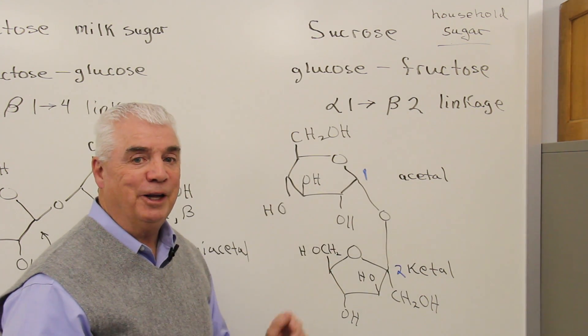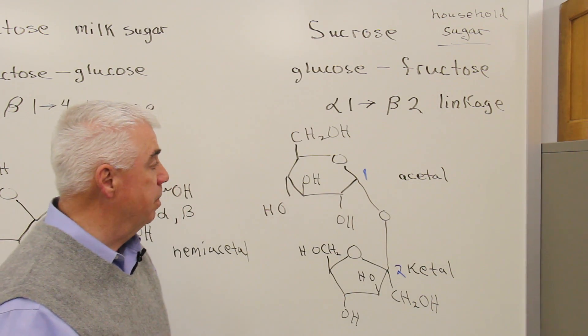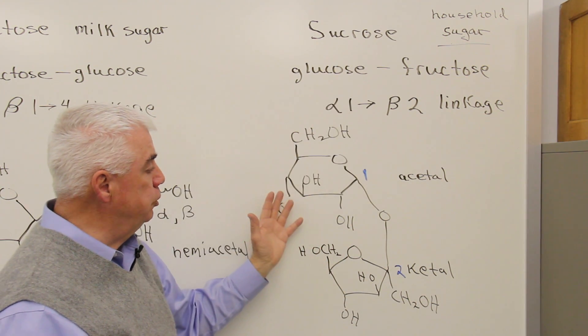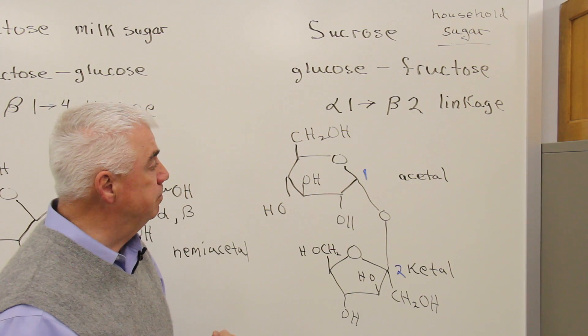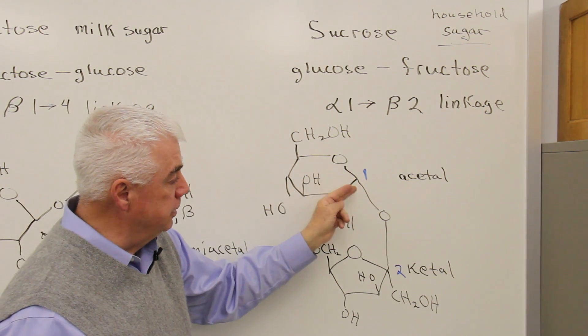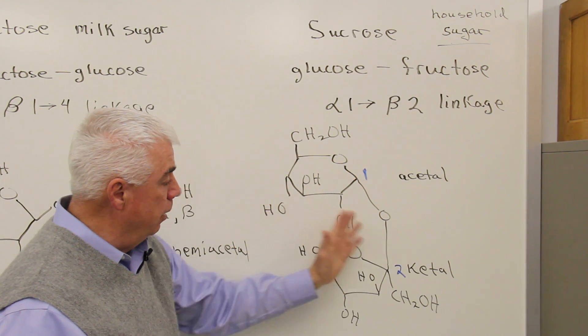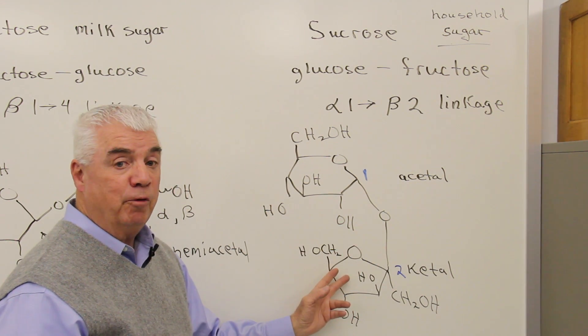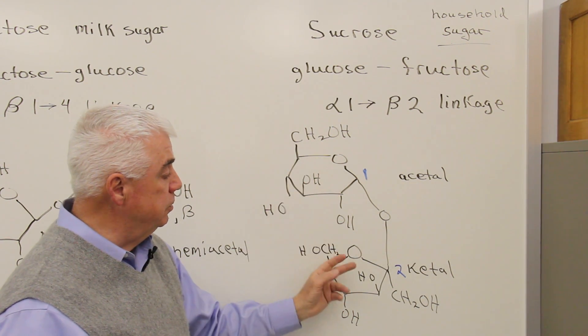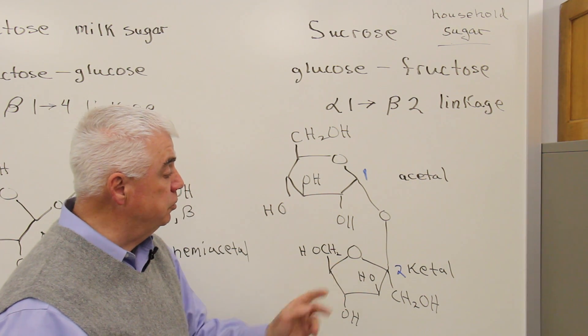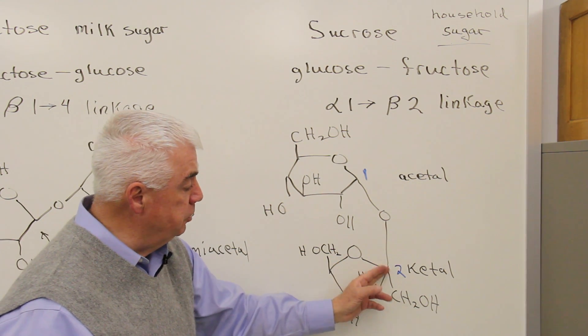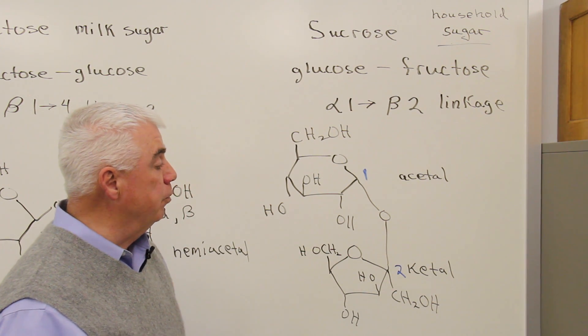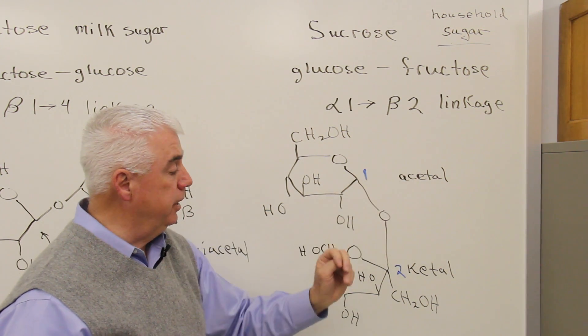We'll look at the structure, but again, you don't have to worry about being able to reproduce this structure. Here's a glucose unit at the top. Here at position one, it's alpha. Down at the bottom is the fructose ring system, a five-membered ring rather than six. This is pyranose. This is furanose. This is position two. It goes one, two, and then works our way around the ring.